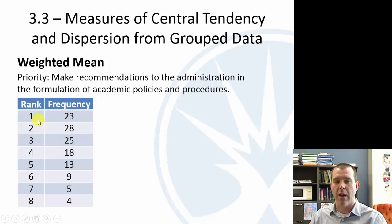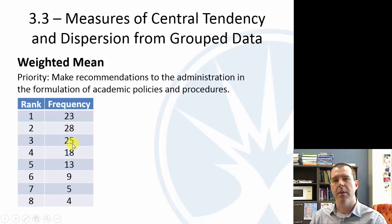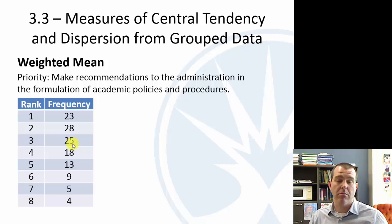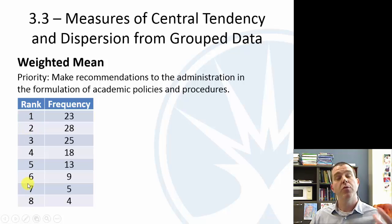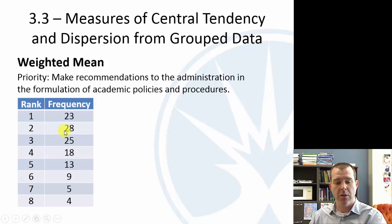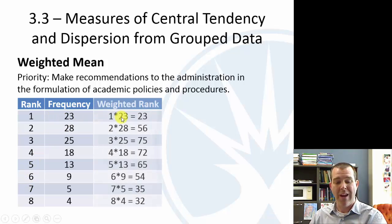Here are the number of people that responded for each rank — ranks one through eight. Not many people rated it a low priority; most gave it a rank of one, two, or three. The question is: what's the average rank? I can't just average the ranks because there are different numbers of respondents in each category.